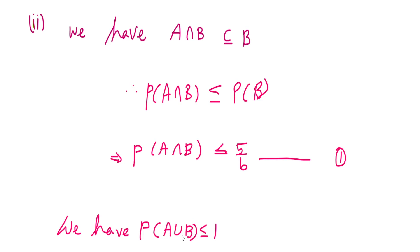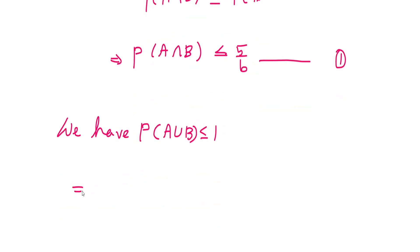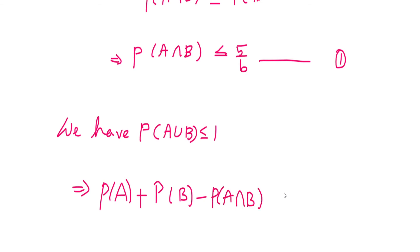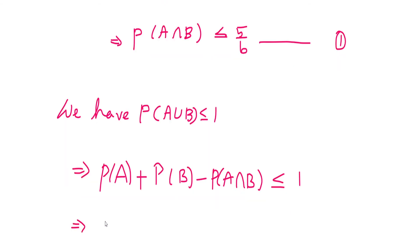Substituting, P(A) + P(B) − P(A∩B) ≤ 1. Taking P(A∩B) to the right side, this implies P(A) + P(B) − 1 ≤ P(A∩B).